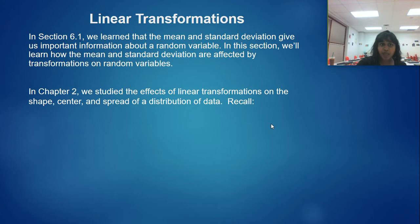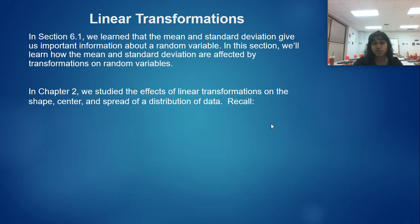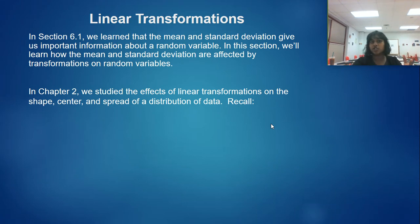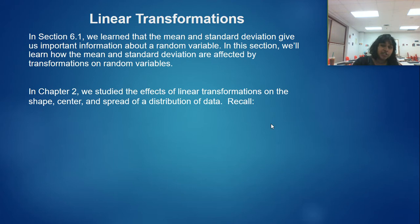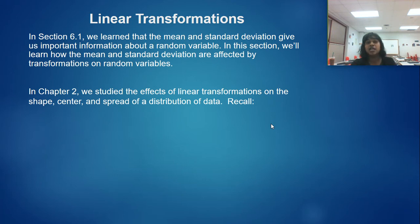So how does that affect transformations? If we recall from an earlier chapter, we learned that addition and subtraction could affect your center but didn't affect the spread or shape. Multiplication and division affected both the center and the spread, but never the shape. We also learned about z-score transformations creating a mean of 0 and a standard deviation of 1 with your entire data set.